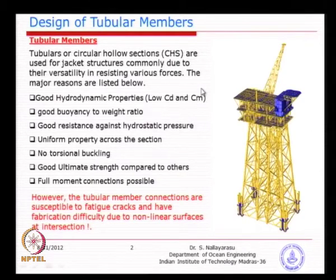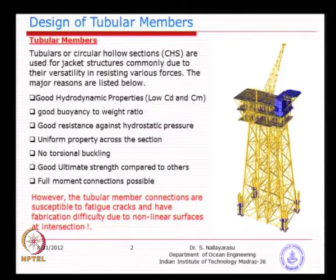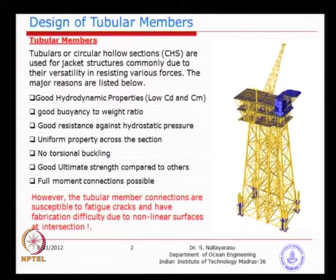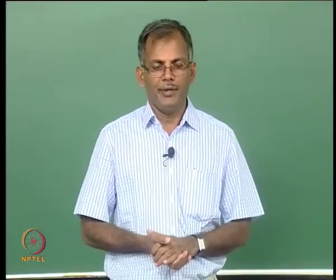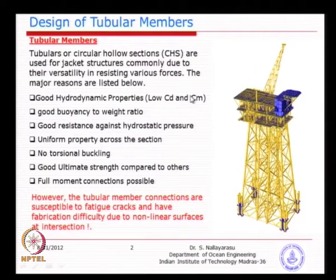Looking at this picture, basically why do we always use tubular members in offshore structures? I can tell you for sure 99 percent of the structures that go into offshore systems, especially fixed platform structures, we normally use tubular sections for several reasons. One of them is basically the hydrodynamic properties. We have already compared C_D and C_M coefficients for various shapes - circular and non-circular. Circular sections have efficiency in terms of reduced hydrodynamic loading because of the shape of the body, which could potentially reduce loading requirements and the cost associated with the platform.